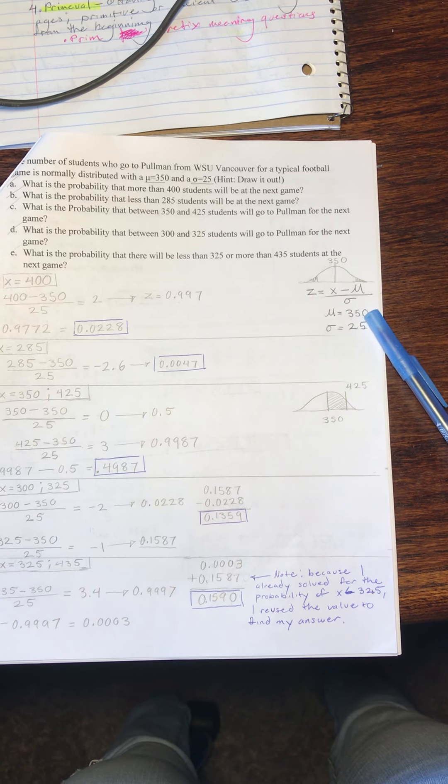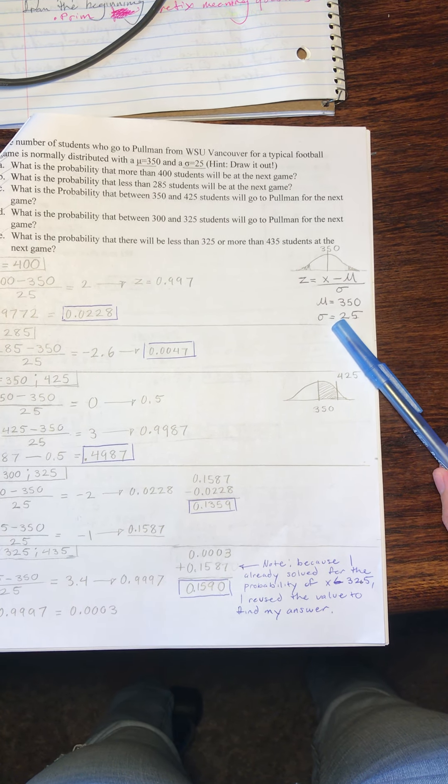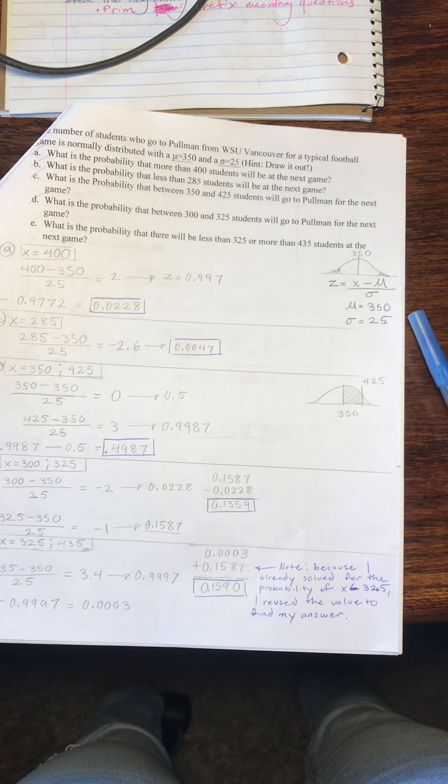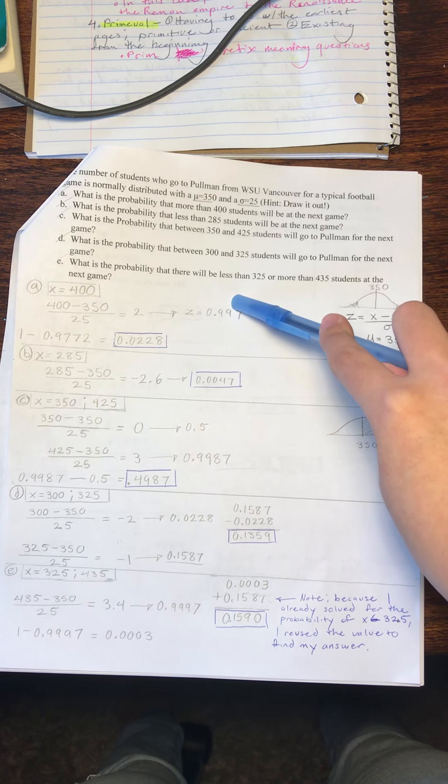We've identified our mu, as I said, 350, standard deviation as 25, and we will use this information for parts A through E.